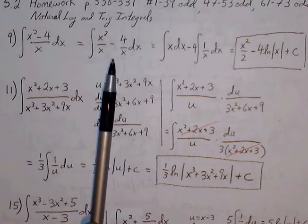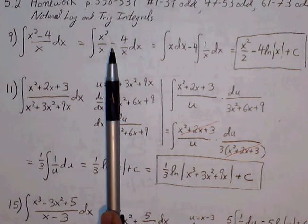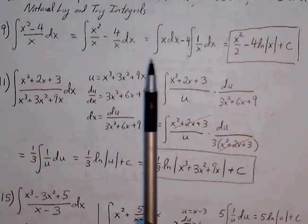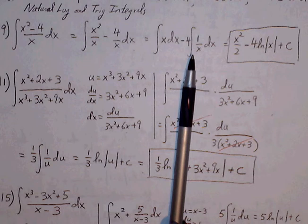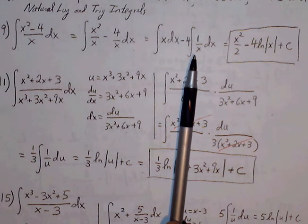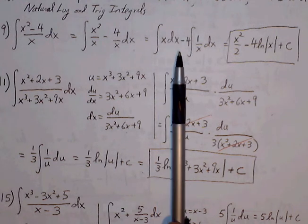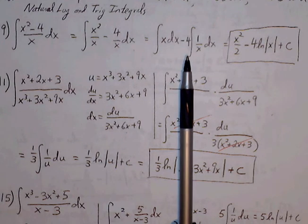Now we can treat these like two separate problems because we have two fractions separated by plus or minus. x squared over x becomes simply x. And 4 over x — 4 times the integral of 1 over x — we can think of this as the natural log rule. So the integral of 1 over x is natural log of x plus c. x uses power rule, giving us x squared over 2 minus 4 natural log of absolute value of x plus c.